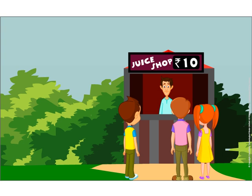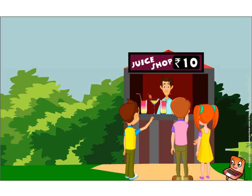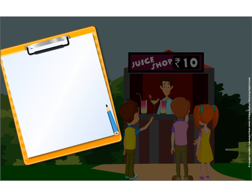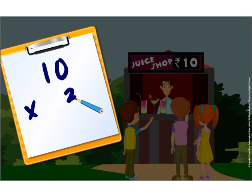John and his friends decide to have a glass of juice before enjoying their rides. Each juice costs Rs. 10 and they buy three glasses of juice. How much do they have to pay for the juices? They should pay 3 into 10, or Rs. 30 for the juices.